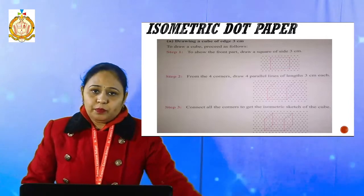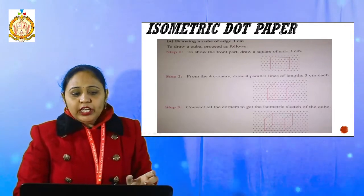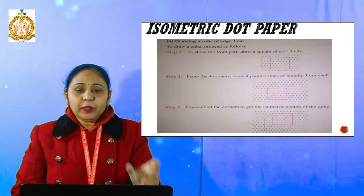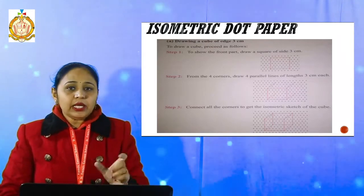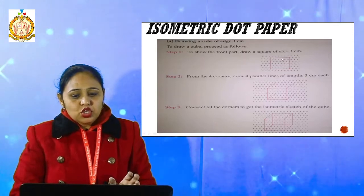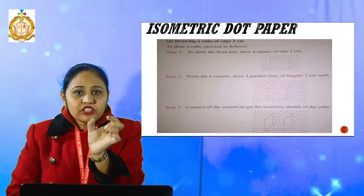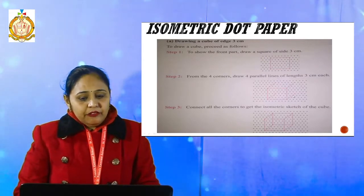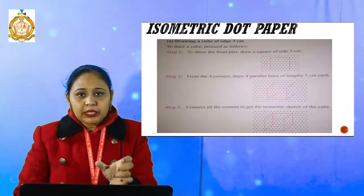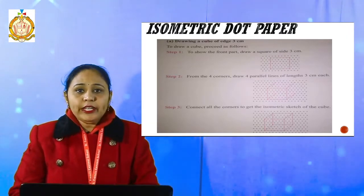Now there is an isometric dot paper. What is isometric? That means there are dots at equal distances on the paper. We have to draw a cube of edge three centimeters. Since it is a cube, length, breadth, and height will all be the same — three centimeters each. So I will take dots at equal spacing: first the front face, then the back side, then the height, using equal numbers of dots to make the cube. In the case of a cuboid, we increase the dimensions according to the given values.